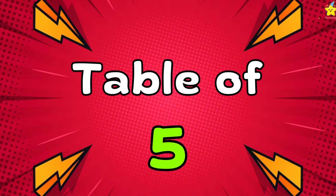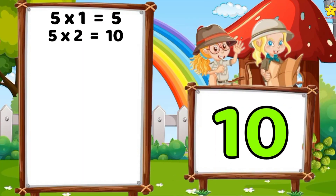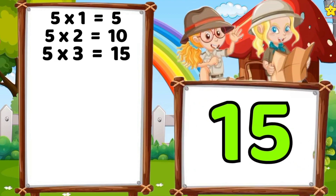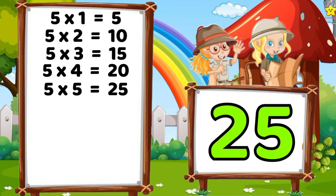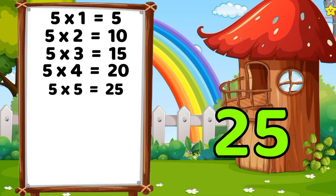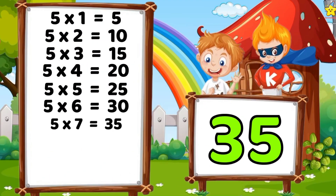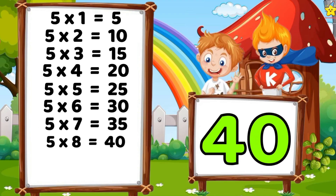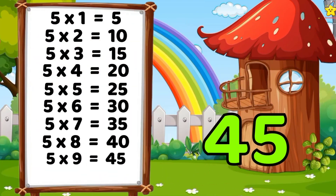Table of five. Five times one is five. Five times two is ten. Five times three is fifteen. Five times four is twenty. Five times five is twenty-five. Five times six is thirty. Five times seven is thirty-five. Five times eight is forty. Five times nine is forty-five.